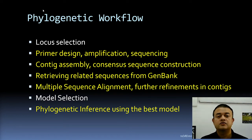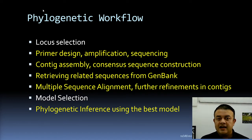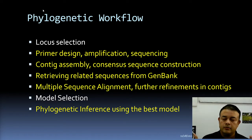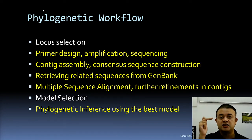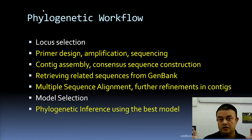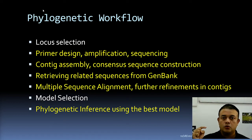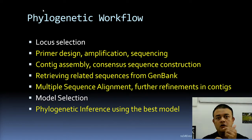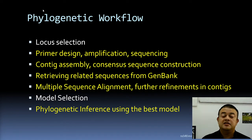Sanger sequencing is preferred because the read length is very long. It works in two directions — bidirectional sequencing. Each direction will stop in between: if the DNA stretch is 1.2 kb, the forward primer will amplify and stop around 700 bases, and the reverse primer will also stop around 700 bases, because of the read length limitation.